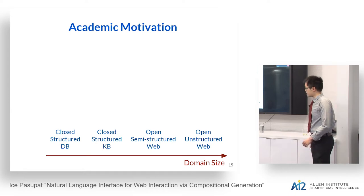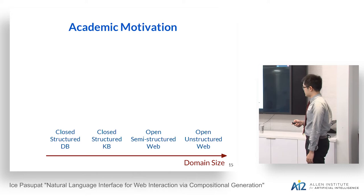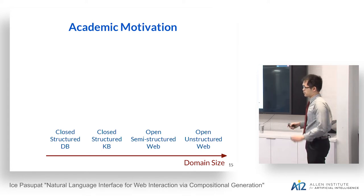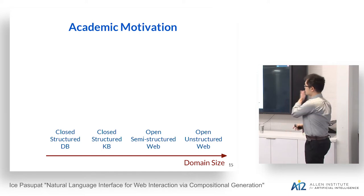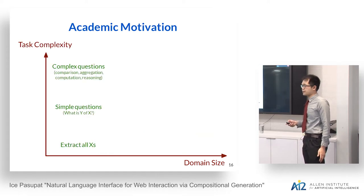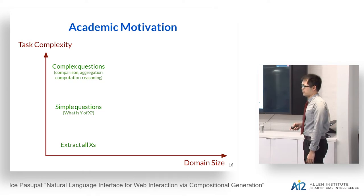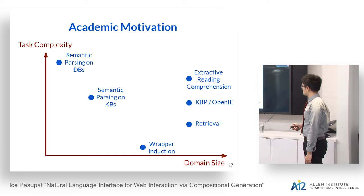As researchers, we look at academic motivation too — how does our work relate to prior work along two axes? The first axis is domain size, ranging from a closed structured database with full schema to the free web with free text. The second axis is task complexity, from simple tasks like extracting telephone numbers with RegEx, to complex questions requiring comparison, aggregation, and arithmetic computation.